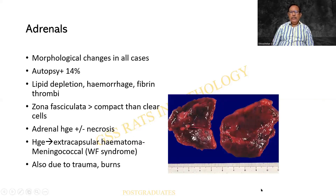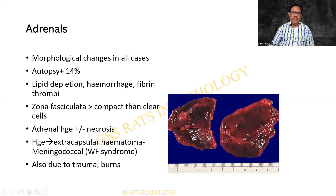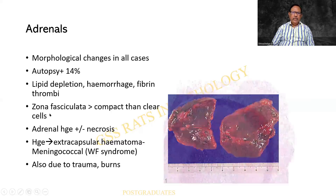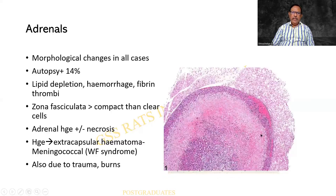The adrenals are almost related to the brain involvement in meningococcal septicemia. There can be an extracorpuscular hematoma — both adrenals are affected with hemorrhage and hematoma formation. At the same time, there is a severe septic shock; the patient collapses. At autopsy, 14% of cases show adrenal involvement. Microscopically, there is lipid depletion, presence of hemorrhage, and fibrin deposition. Normally the cells are vacuolated, but in the zona glomerulosa the cells become more compact rather than clear, and there can be areas of hemorrhage and necrosis.